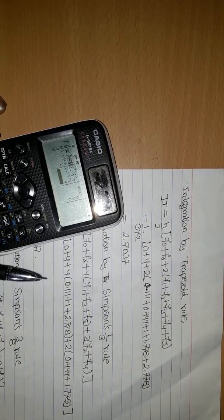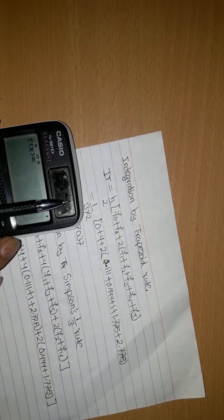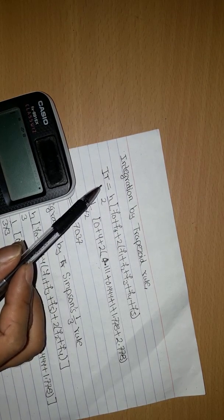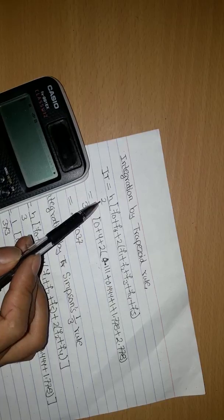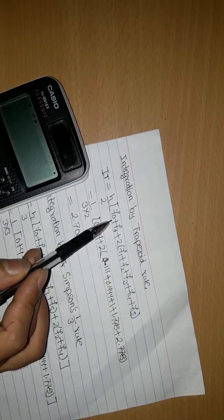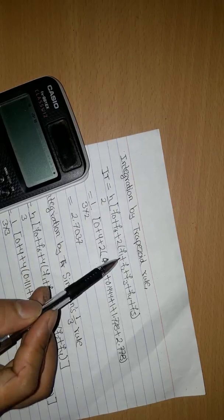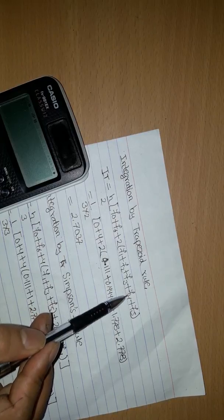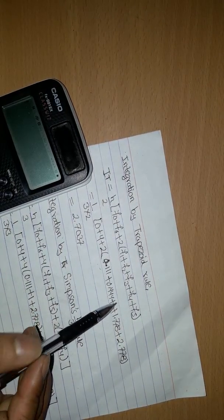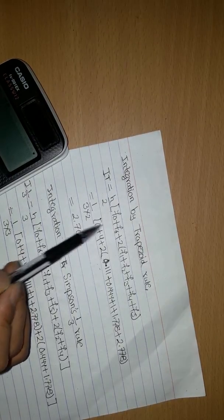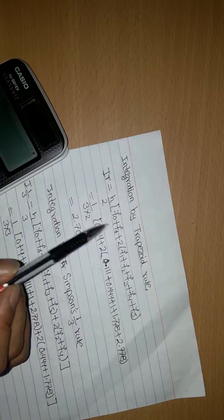Integration by trapeze rule. Trapeze rule formula is H divided by 2 bracket F0 plus F6 plus 2(F1 plus F2 plus F3 plus F4 plus F5). Put the value of trapeze formula.